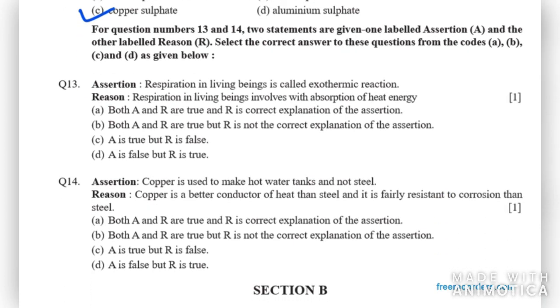Moving on to questions 13 and 14. They are based on assertion and reason. First part: Assertion - Respiration in living beings is called exothermic reaction. Reason - Respiration in living beings involves absorption of heat energy. As you can see, A is true. And respiration involves absorption of heat energy, that's false. So assertion is true and reason is false. That means C part.